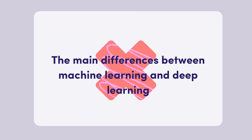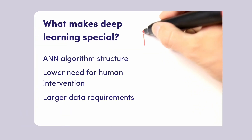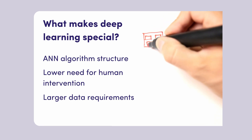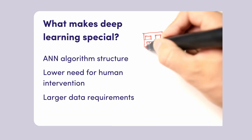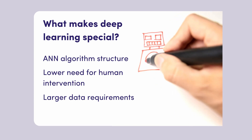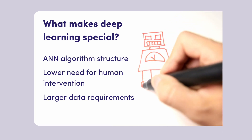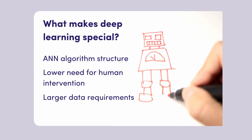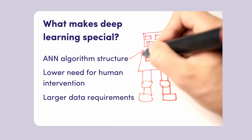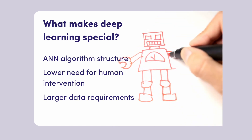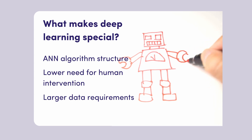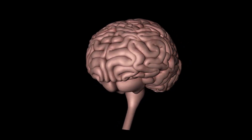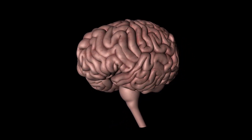The main differences between machine learning and deep learning — this is a common question, but if you've watched this far, you probably know it's not quite the right one to ask. Deep learning algorithms are machine learning algorithms. It's better to think about what makes deep learning special within machine learning. The answer lies in the ANN algorithm structure, the lower need for human intervention, and the large data requirements. While traditional machine learning algorithms have a rather simple structure — such as linear regression or a decision tree — deep learning is based on an artificial neural network. This multilayered ANN is, like a human brain, complex and intertwined.